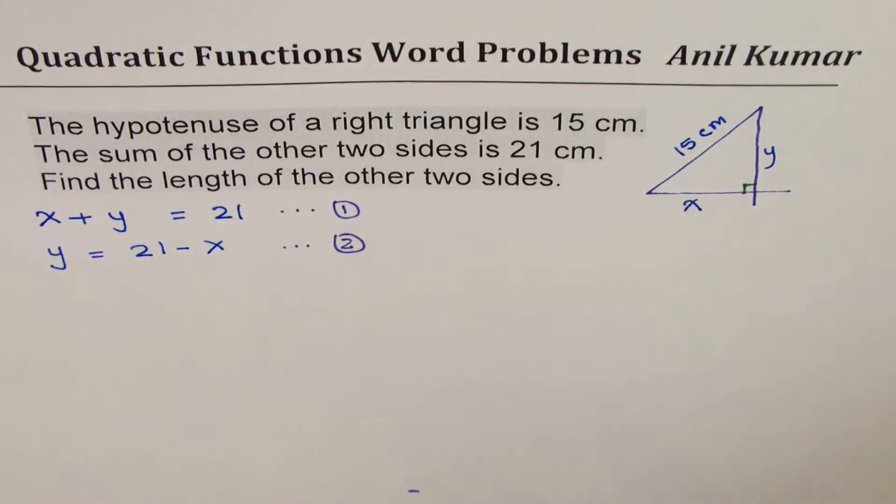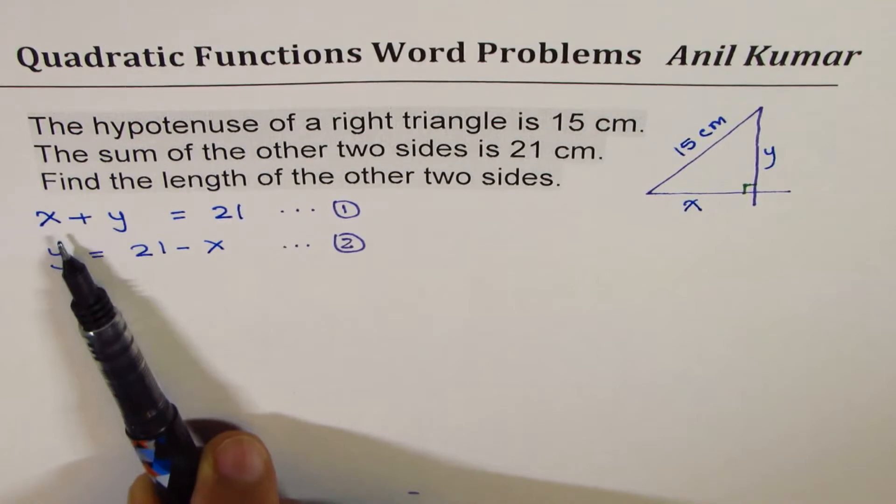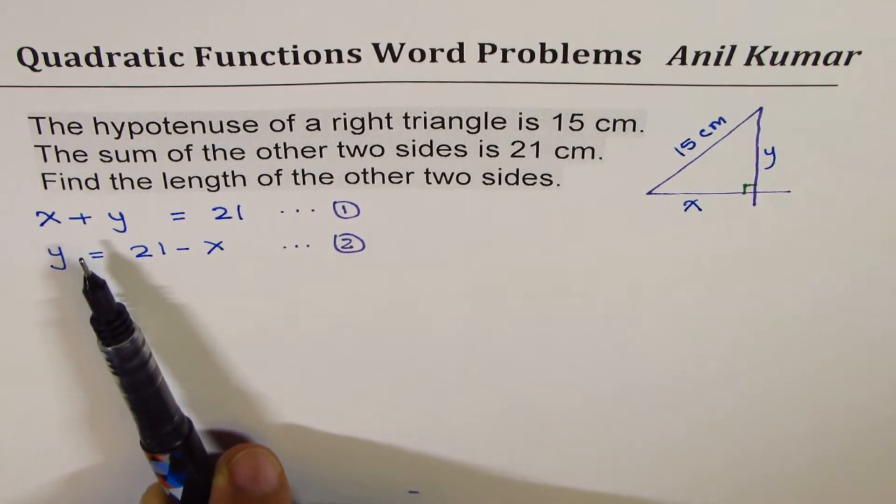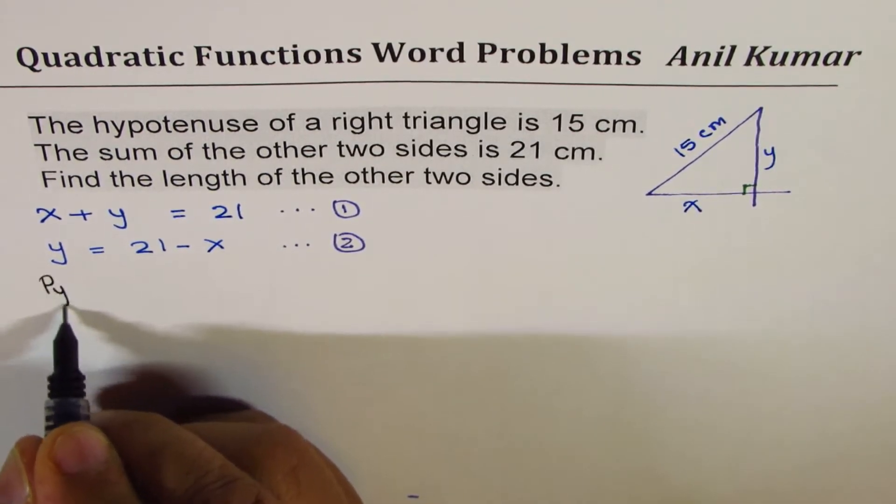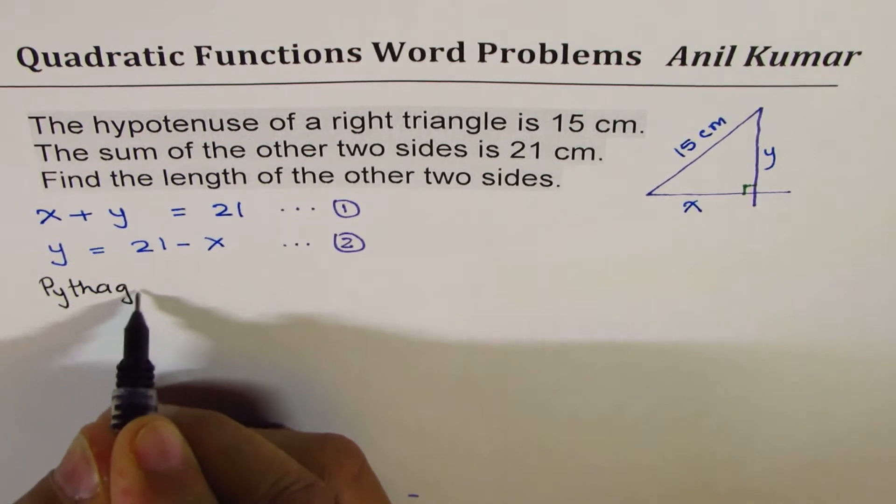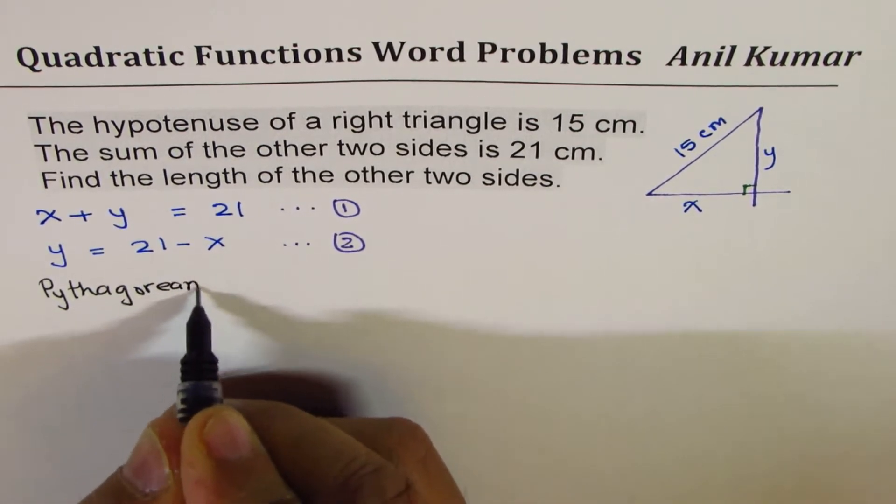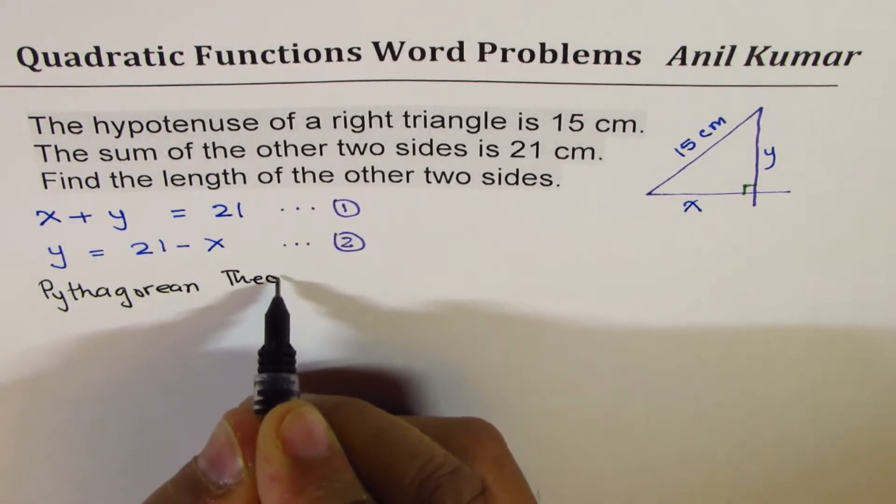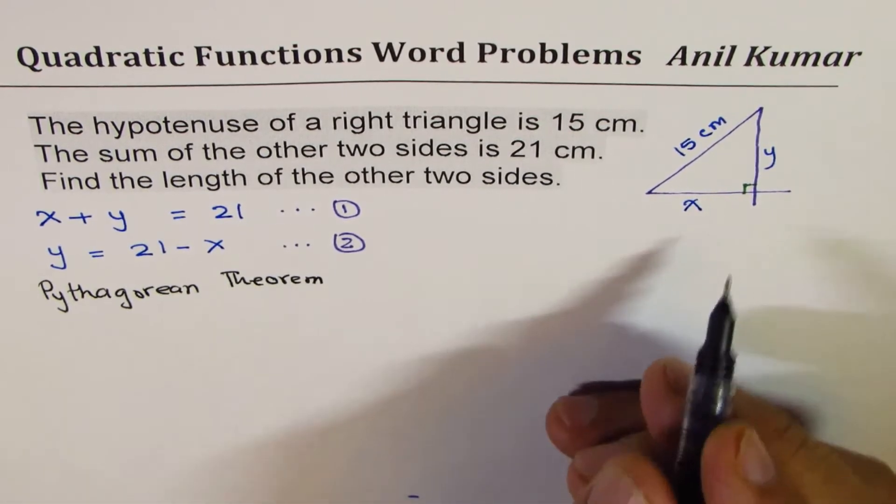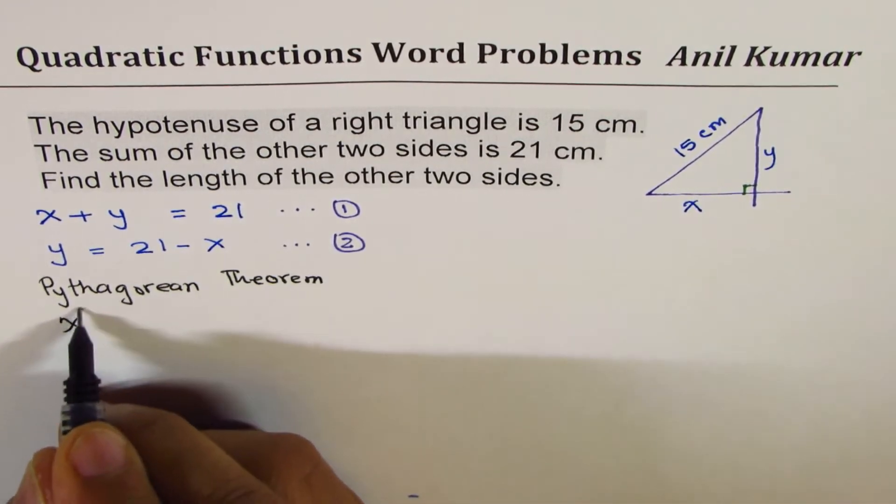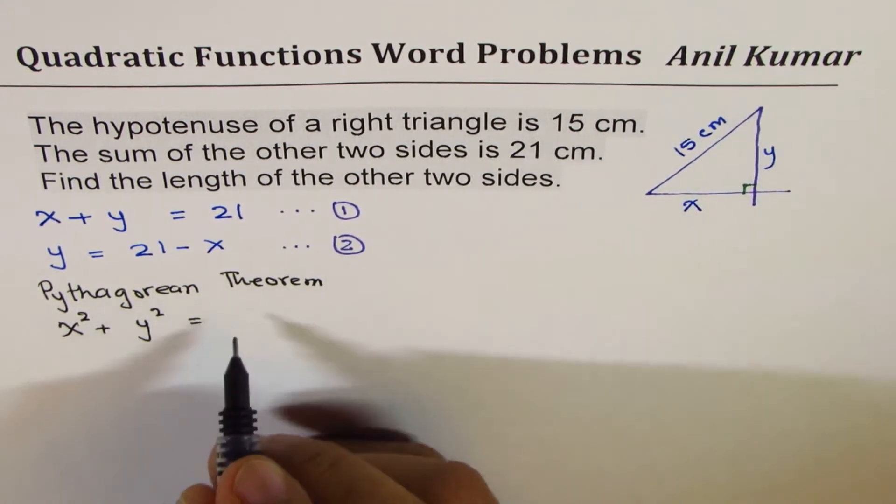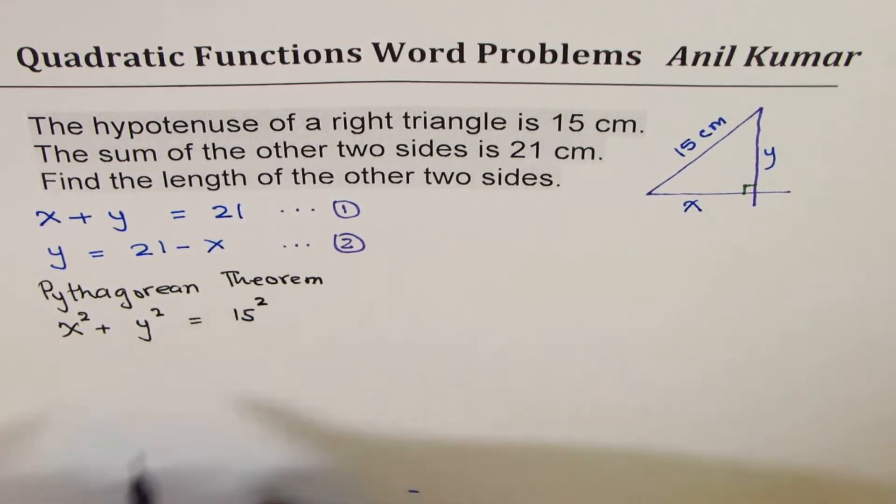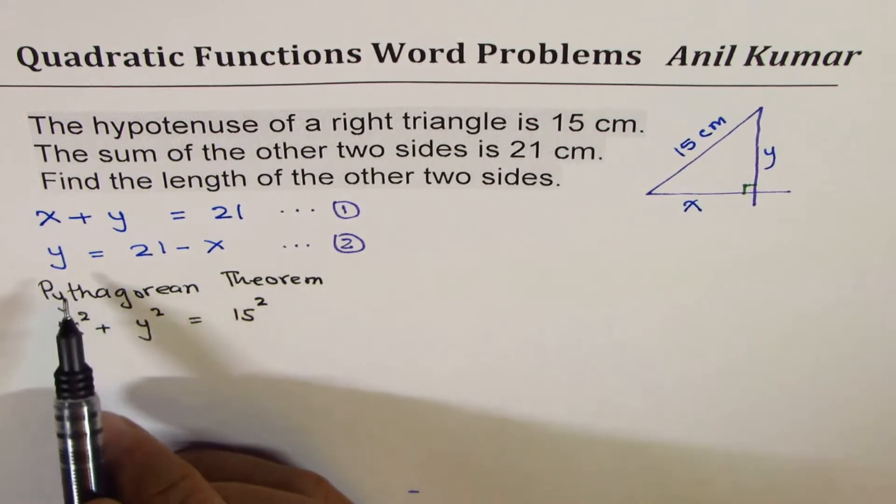We could use the Pythagorean theorem. It relates the three sides of a right triangle. So we know x² + y² equals the hypotenuse squared, which is 15². Now we can substitute y as 21 - x. So we could write this as x² plus, within brackets, 21 minus x.